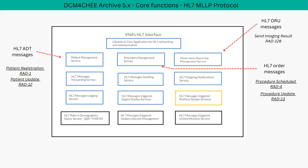Core functions with respect to HL7 protocol are primarily for handling the patient management service, which processes HL7 ADT messages to create, update, or merge patient records. There is also a procedure management service that accepts and processes HL7 order messages following IHE transactions, helping to create or update modality worklists. An observation reporting management service processes HL7 ORU messages and converts them into DICOM structured reports or encapsulated PDF reports.